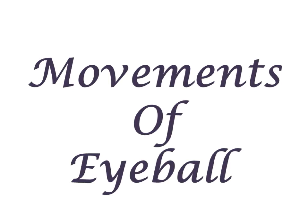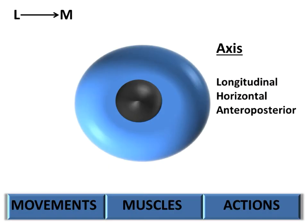The eyeball can move along three different axes: longitudinal, horizontal, and anteroposterior.